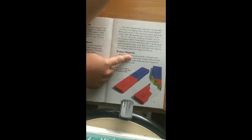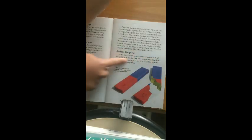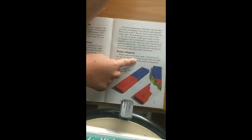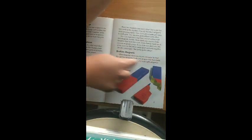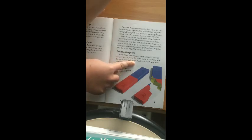Broken magnets. What happens when you break a magnet in two? You get two magnets. Each new magnet will have both a north and a south pole. North and south magnetic poles are always paired.